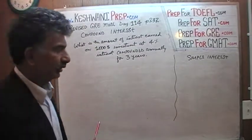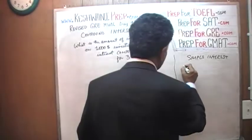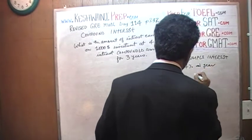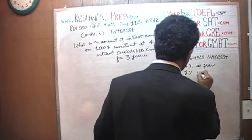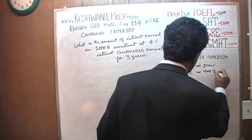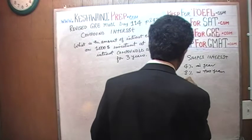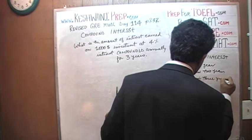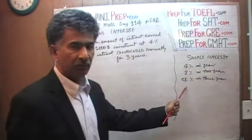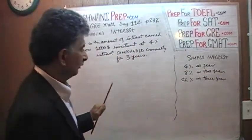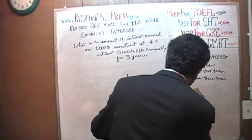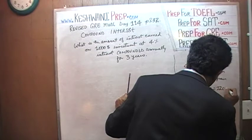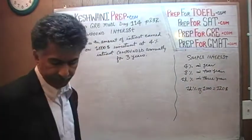Had it been simple interest, what would happen is that we will earn 4% in one year, therefore 8% in two years, we will earn 12% in three years, and we will simply calculate 12% of the amount that we are investing. So it's 12% of $1,000, which is simply $120, and that will be the end of the story.